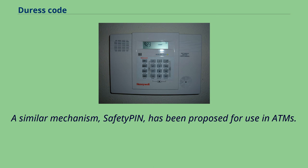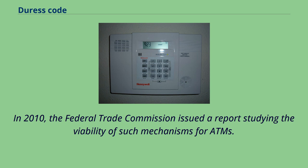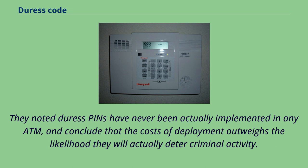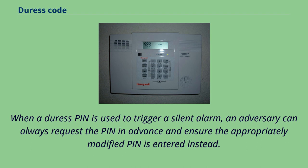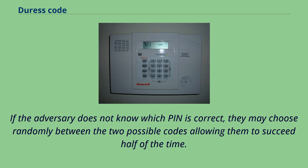A similar mechanism, called a safety PIN, has been proposed for use in ATMs. In 2010, the Federal Trade Commission issued a report studying the viability of such mechanisms for ATMs. They noted duress PINs have never been actually implemented in any ATM, and concluded that the costs of deployment outweigh the likelihood they will actually deter criminal activity. When a duress PIN is used to trigger a silent alarm, an adversary can always request the PIN in advance and ensure the appropriately modified PIN is entered instead. If the adversary does not know which PIN is correct, they may choose randomly between the two possible codes, allowing them to succeed half of the time.